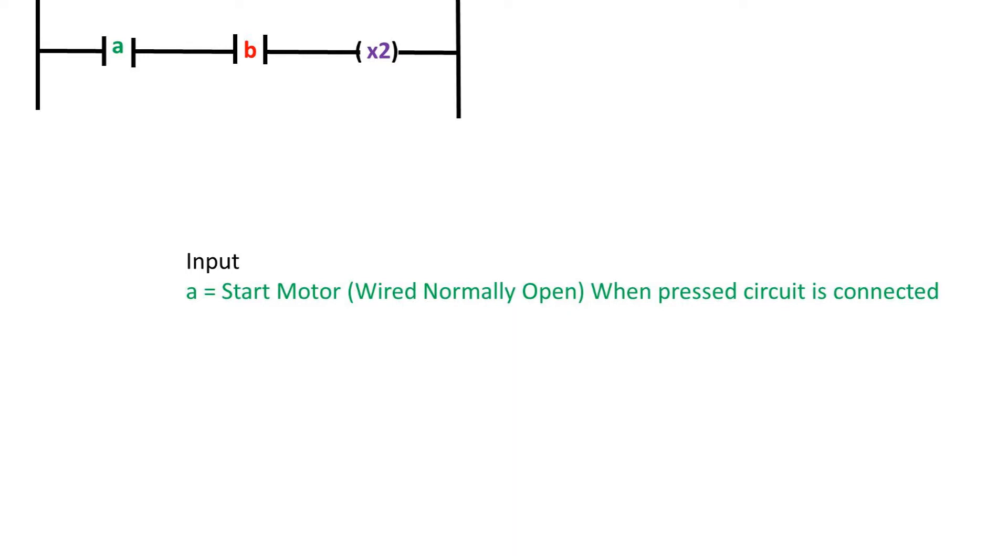The button, when pressed, will connect the circuit. The second contact, which we will refer to as B, is a stop button that is wired normally closed. In other words, it is always connected until the button is pressed, then the circuit is no longer connected.